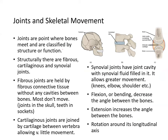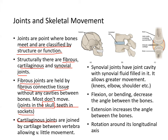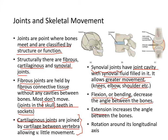Joints are where bones meet, and they are classified by function and structure. Structurally, there are fibrous, cartilaginous, and synovial joints. Fibrous joints are held by fibrous connective tissue without any cavity between the bones — things like joints in the skull or teeth in their sockets. Cartilaginous joints are joined by cartilage between vertebrae, allowing very little movement. Synovial joints have a joint cavity filled with synovial fluid, allowing greater movements — such as knees, elbows, shoulders, and fingers. Flexion is bending, which decreases the angle between bones. Extension increases the angle. Rotation refers to movement around the longitudinal axis.